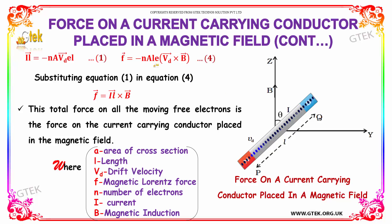A is the area of cross section, L is the length, VD is the drift velocity, F is the magnetic Lorentz force, N is the number of electrons, I is the current, and B is the magnetic induction.